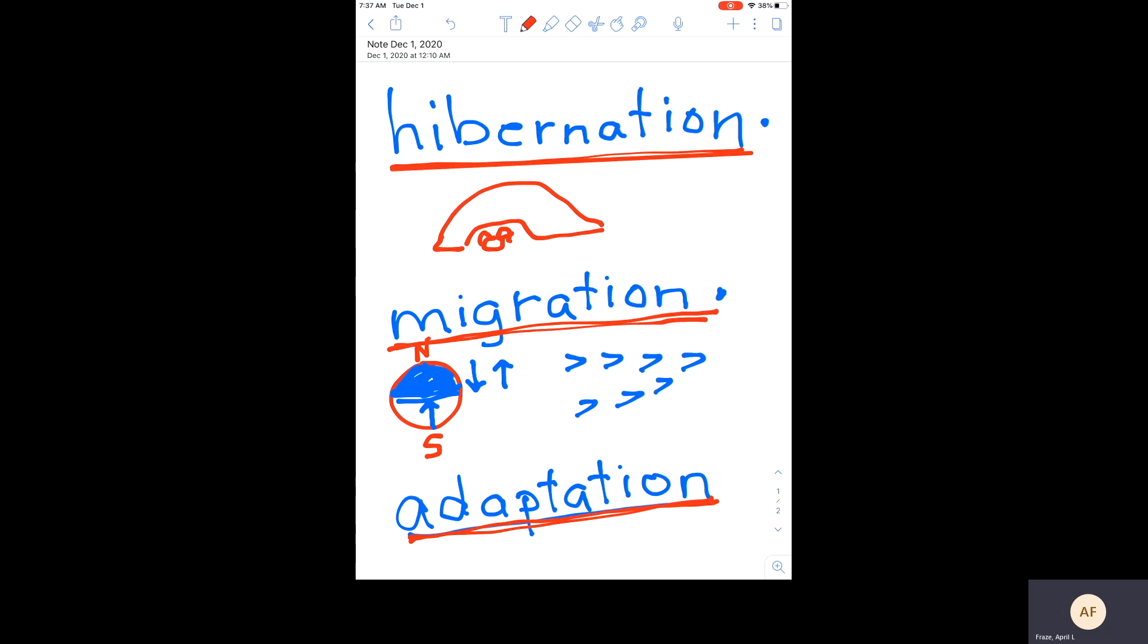Now something I thought that would be really fun for a STEM challenge today is think about what kind of home you could make for an animal that hibernates. If you have a box of recyclables, maybe you could create a nice place for a bear or another type of animal to hibernate.